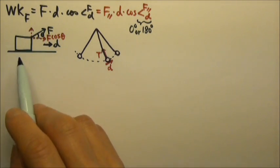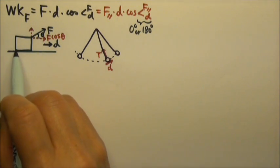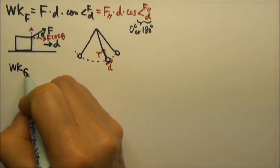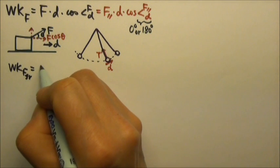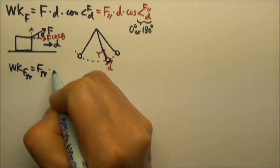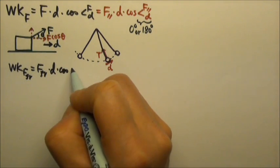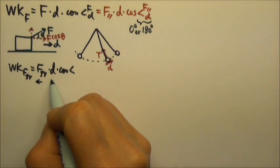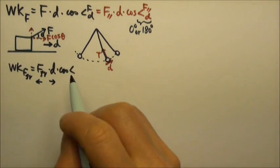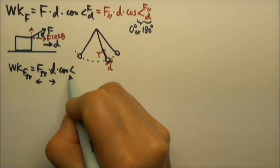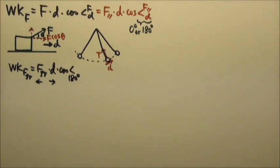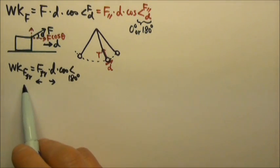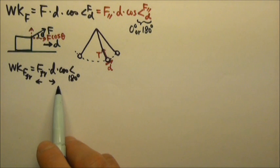Now let's go back and look at the box. If there is friction between the box and the table, then the work done by friction is the friction force times the displacement times cosine of the angle between the two. Friction acts to the left while displacement goes to the right, so this is cosine 180 degrees, which is negative one. So the work done by kinetic friction is negative.